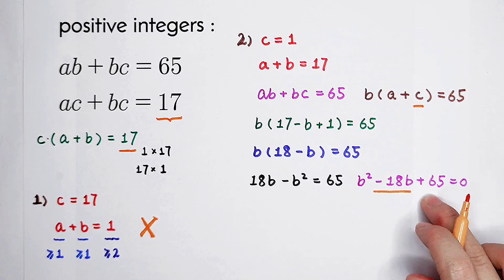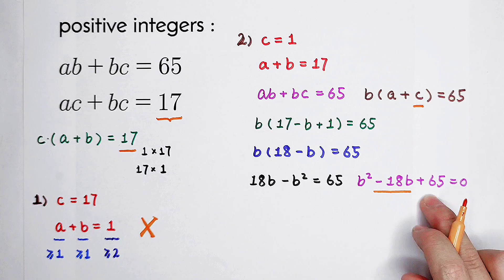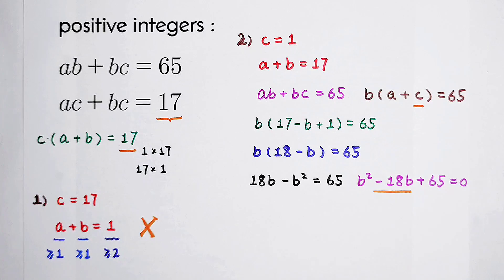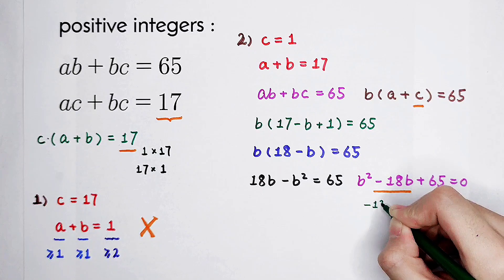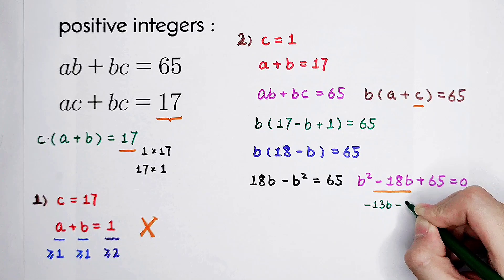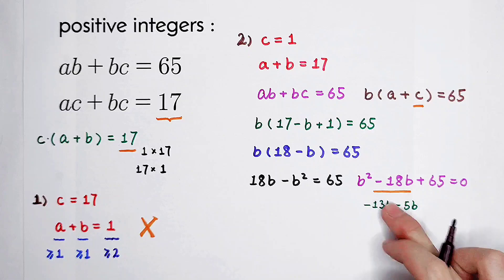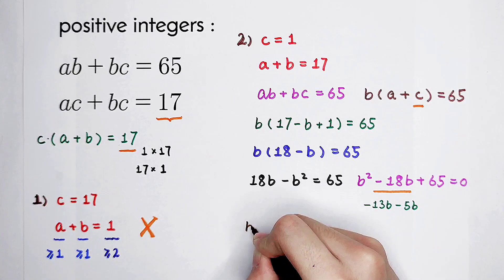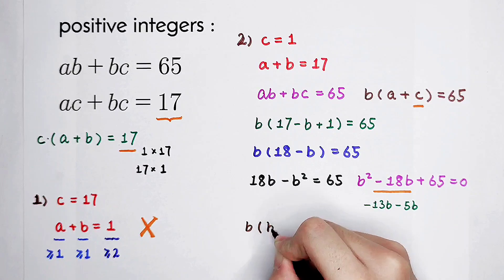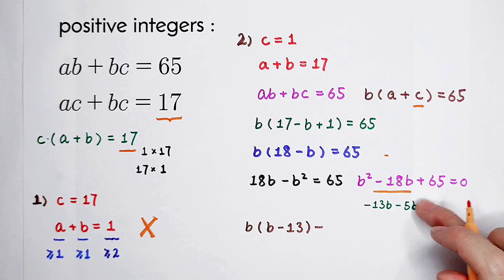Negative 18b, it can be separated into minus 13b minus 5b. Then, b squared minus 13b, we can take out b, b times b minus 13, minus 5b plus 65.